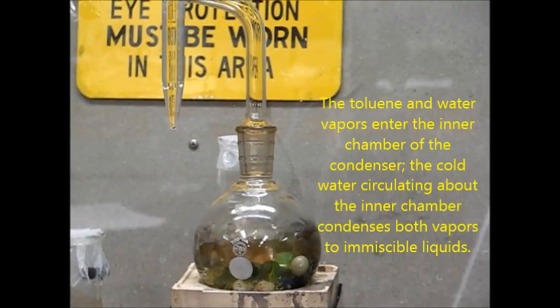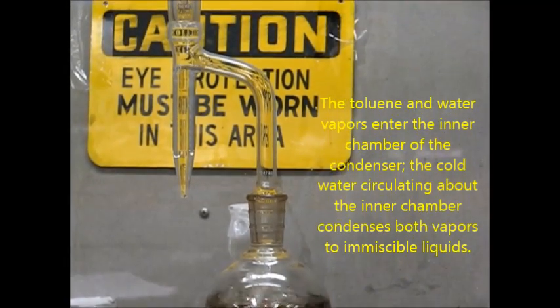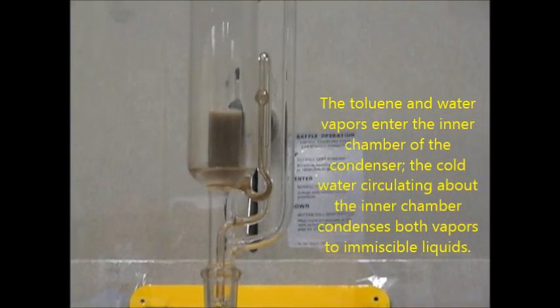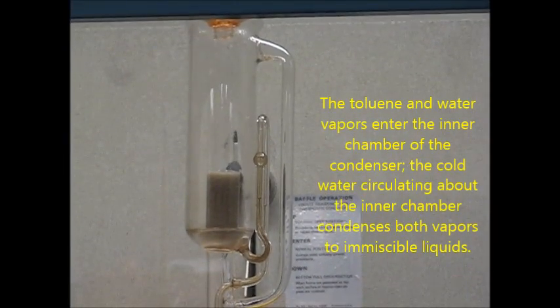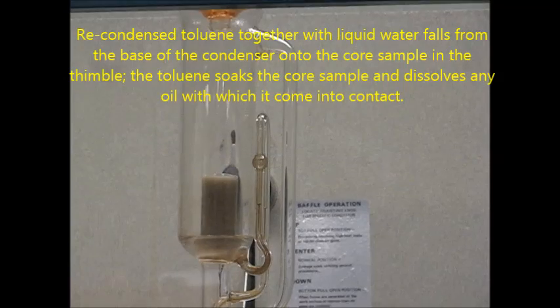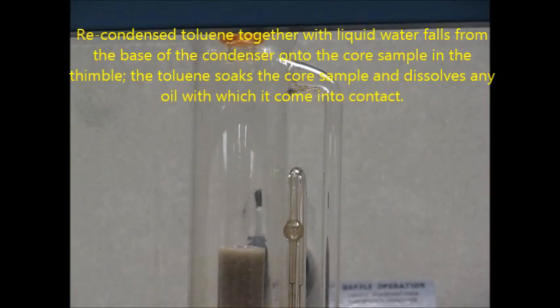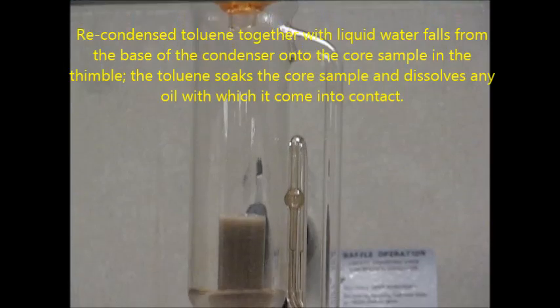The toluene and water vapors enter the inner chamber of the condenser. The cold water circulating about the inner chamber condenses both vapors to immiscible fluids. The recondensed toluene together with liquid water falls from the base of the condenser onto the core sample and the thimble.